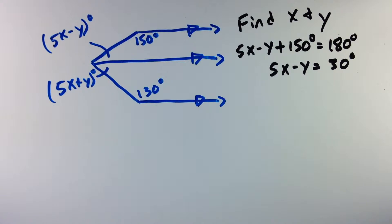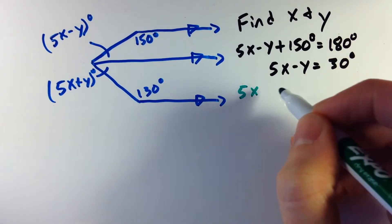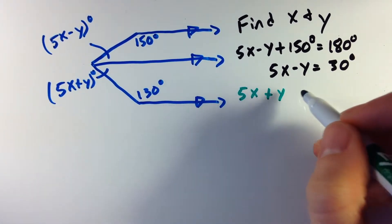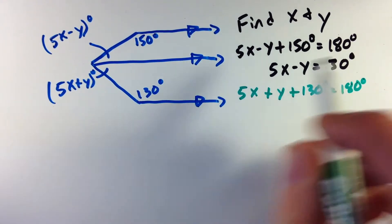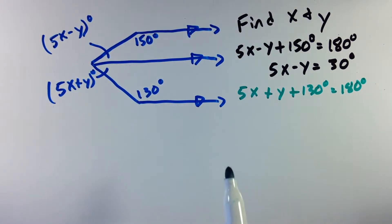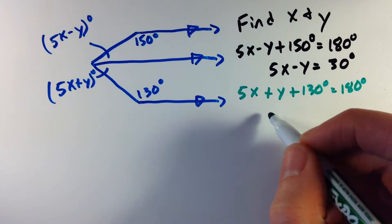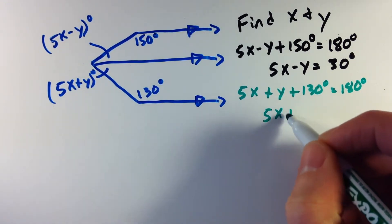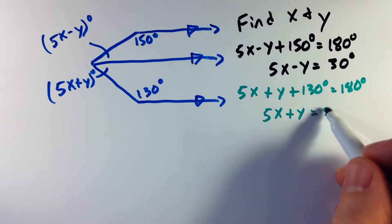My second equation, let's do this in green, is the other two that are supplementary. So I have 5x plus y plus 130 is equal to 180 degrees, because these two angles are supplementary, because they're both consecutive interior angles. We have two parallel lines that are cut by a transversal, and I'm going to simplify it a little more. 5x plus y equals 180 minus 130 is 50 degrees.